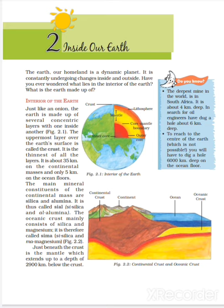Just like an onion has inner layers — two, three, four layers — similarly the earth has many layers. Concentric layers means all layers share the same center. We live in the top layer, which is the crust.